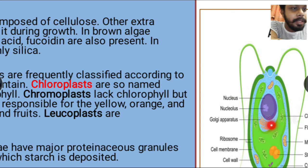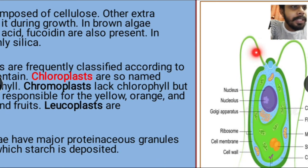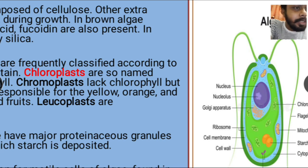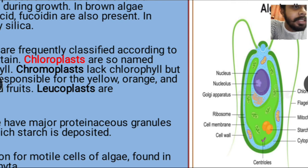Here we can see the structure of algae. These are the flagella by which algae can move from one place to another. This portion is the nucleus where the genetic material of algae is present. These are the Golgi apparatus, where protein folding occurs after synthesis. In the cytoplasm, the dot particles are the ribosomes where protein synthesis is done.